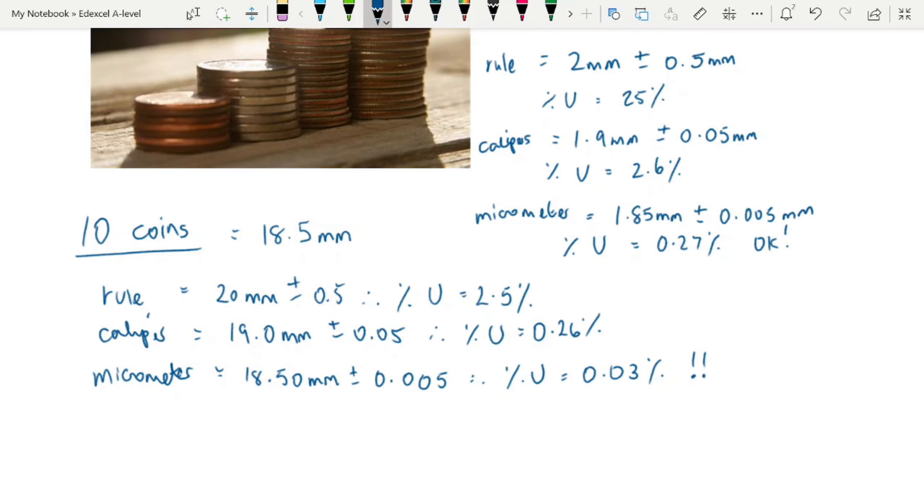So you can see that you get massive reductions when you do these multiples. Now this also applies to any measurement that you make. So if you're measuring a distance, for example, if you could measure multiples of that distance, like this thickness of the coin, then you're going to reduce your percentage uncertainty.